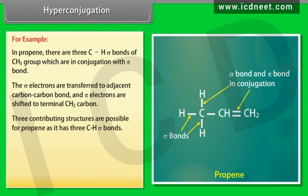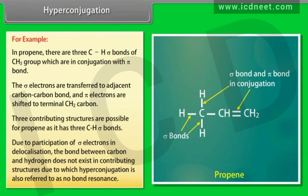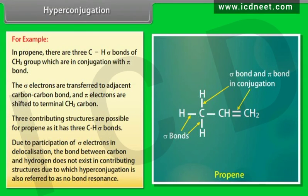Three contributing structures are possible for propene as it has three C-H sigma bonds. Due to participation of sigma-electrons in delocalization, the bond between carbon and hydrogen does not exist in contributing structures, which is why hyperconjugation is also referred to as no-bond resonance.